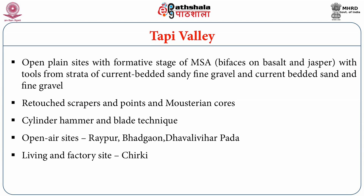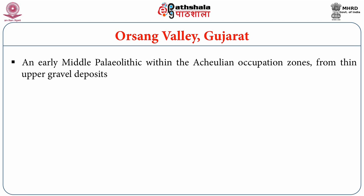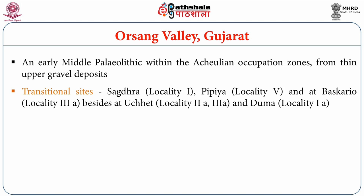In the Tapi Valley, a large number of open-air Middle Paleolithic sites have been found, with emphasis on using cryptocrystalline silica rocks such as jasper and chert. Basalt was also occasionally used for making tools. Further westwards into Saurashtra in the Orsang Valley, several sites have been systematically documented. It has been inferred that the Middle Paleolithic developed out of the late Acheulean tradition in the region, and series of sites indicate this transition from Lower to Middle Paleolithic. Sites include Sagdra, Pipiya, and Bascario.